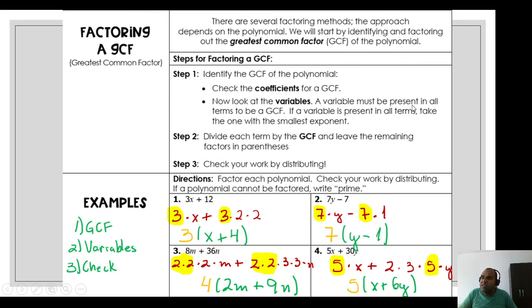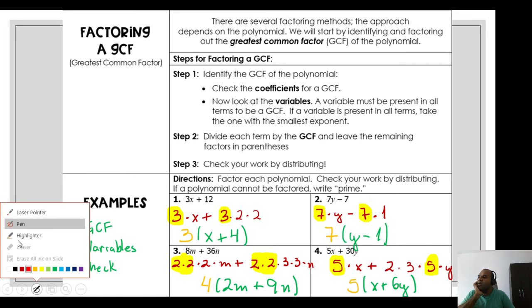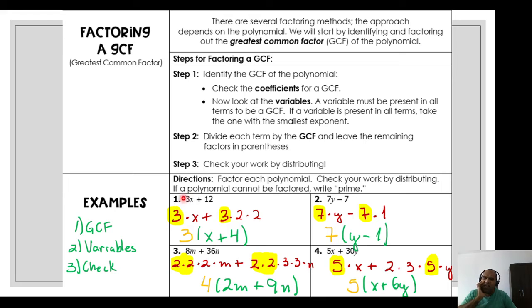To understand this stuff, factoring by GCF, we need to figure out a number that can divide both polynomials, both terms. The first term, the second one, there can be divided by one original number. As you can see in the examples, the first one, number one, 3x plus 12. Remember the steps: Step number one, you need to factor each term. 3 times x and 12, I can write as 3 times 2 times 2. What is the common factor here, the GCF, the greatest common factor? The GCF is number 3. It goes before the parentheses, parentheses here, x plus 4, what's the remainder here, x plus 4.